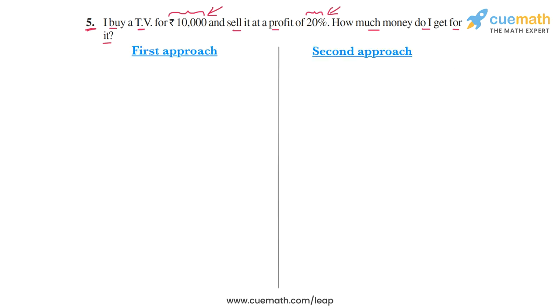Now let me show you two slightly different approaches of solving this problem. Our first approach is based on the unitary method. Let's see how that will work. So we are given that the profit that I made was 20%. And profit of 20% means that if the cost price is, let's say, 100 rupees, this means that the profit will be Rs. 20. That's what the profit of 20% means, right? So the profit will be Rs. 20.